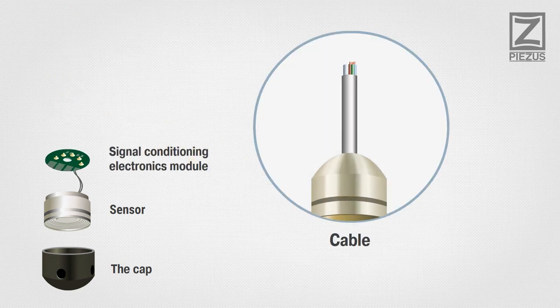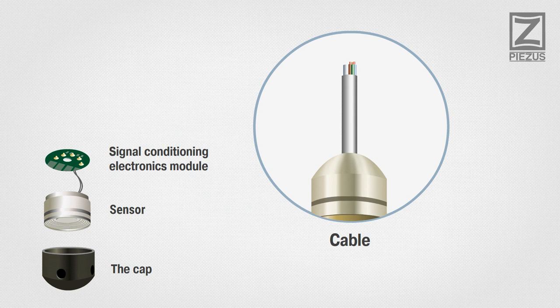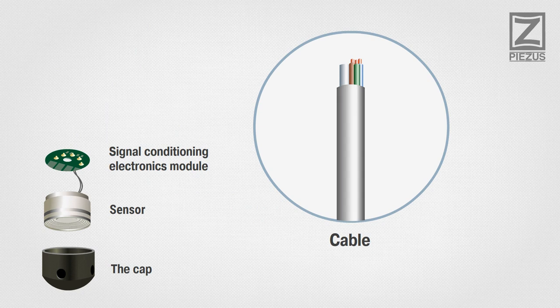The cable is used to transmit the signal and power the instrument. It consists of an external sheath, which is made of different materials to choose from, wires, and a capillary tube.